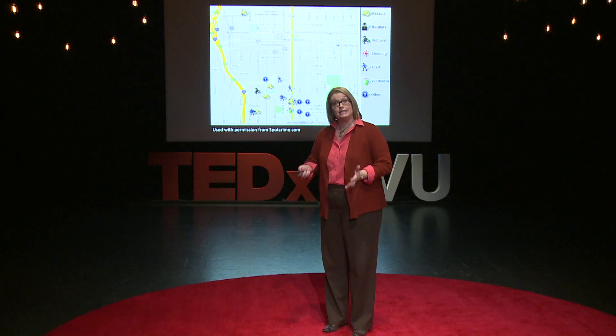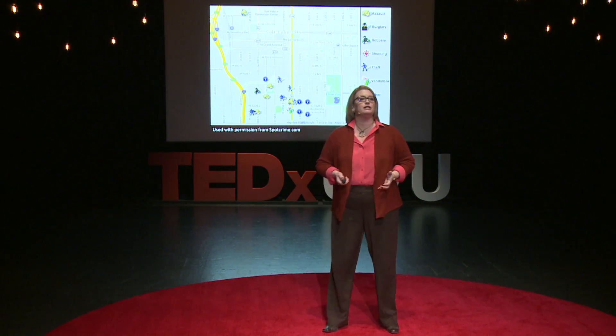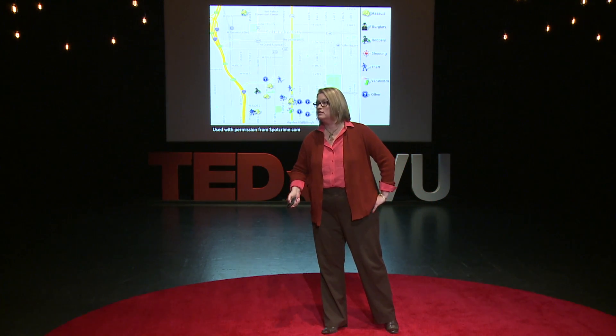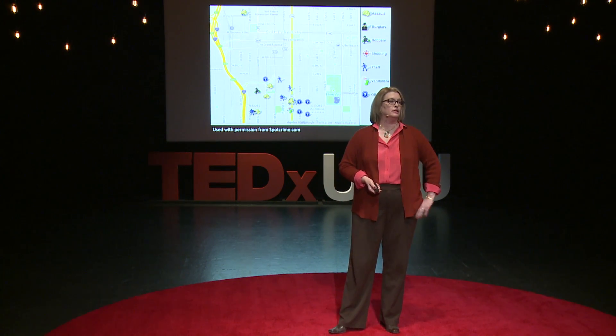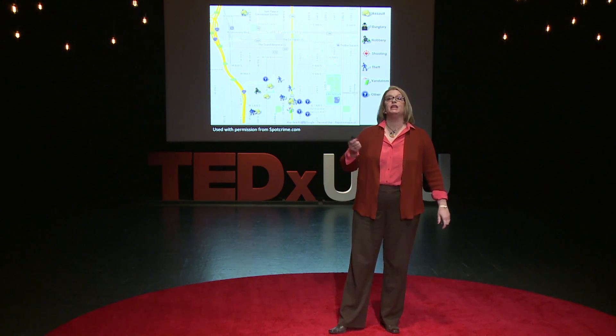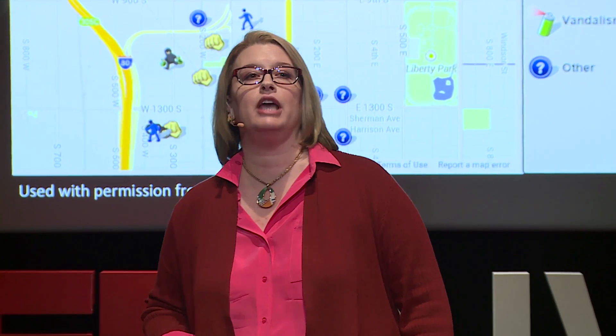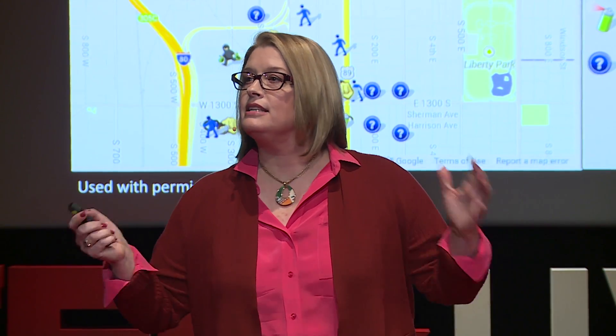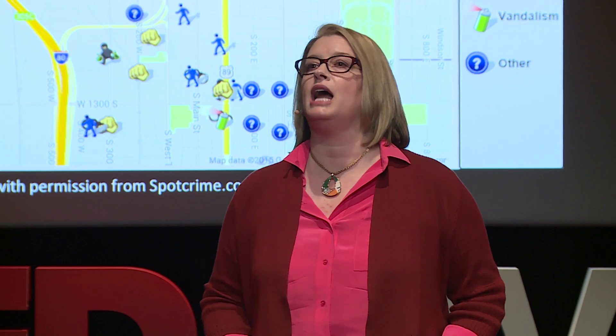It gets really interesting when we start adding other information to this map. What if we pulled in data on where houses or businesses are located to find out if this is residential crime? Or we can pull in income information from the Census Bureau, patterns of education levels. What might start happening is we begin learning something very interesting about the lifestyles of the criminals themselves. It's this ability to mix different kinds of data and portray it on a map that makes it so effective for researchers.